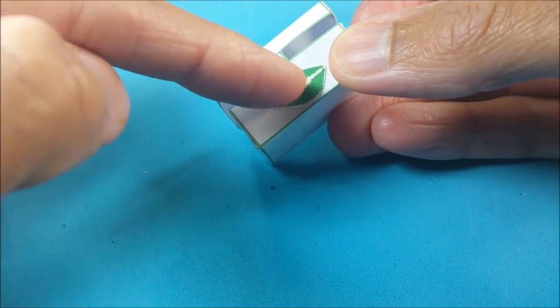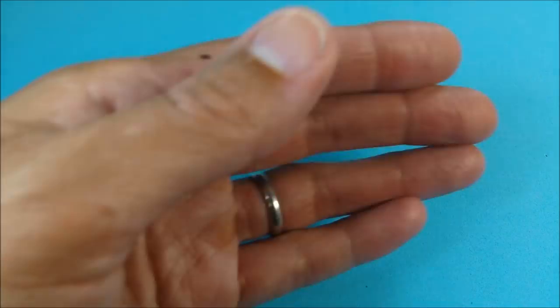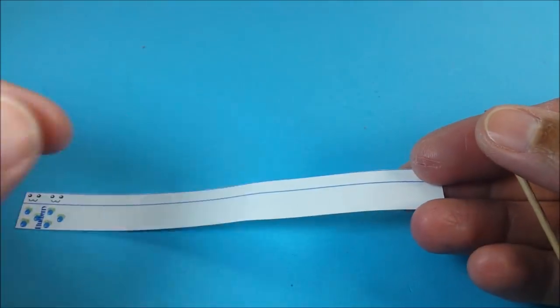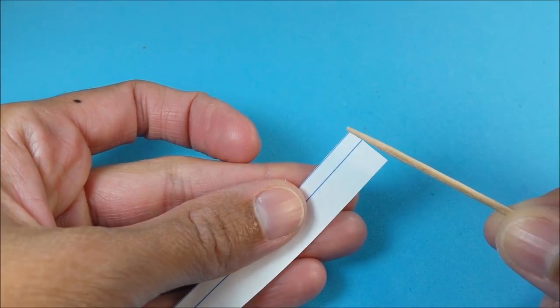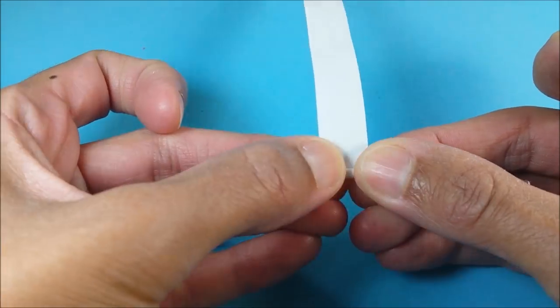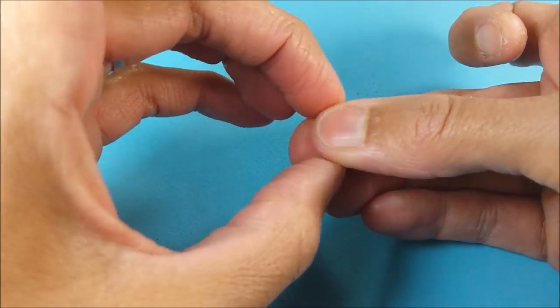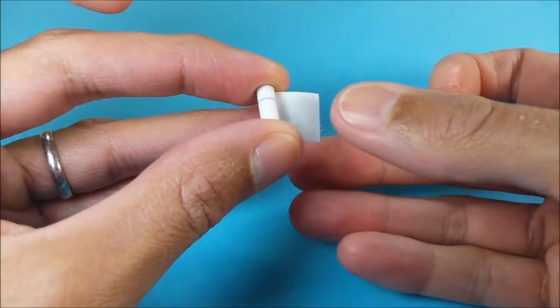Then I cut out the chapstick templates. I print the chapstick templates on a regular piece of paper, cut them out, and then using a toothpick to guide me, I can just kind of roll them up.